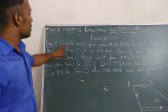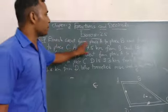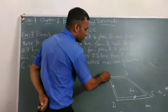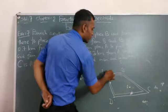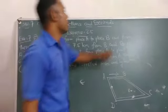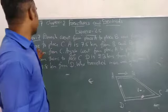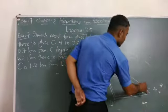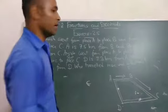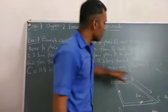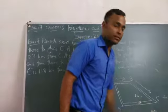The question is, Dinesh went from place A to place B, and from there to place C. Dinesh went from A to B and B to C.